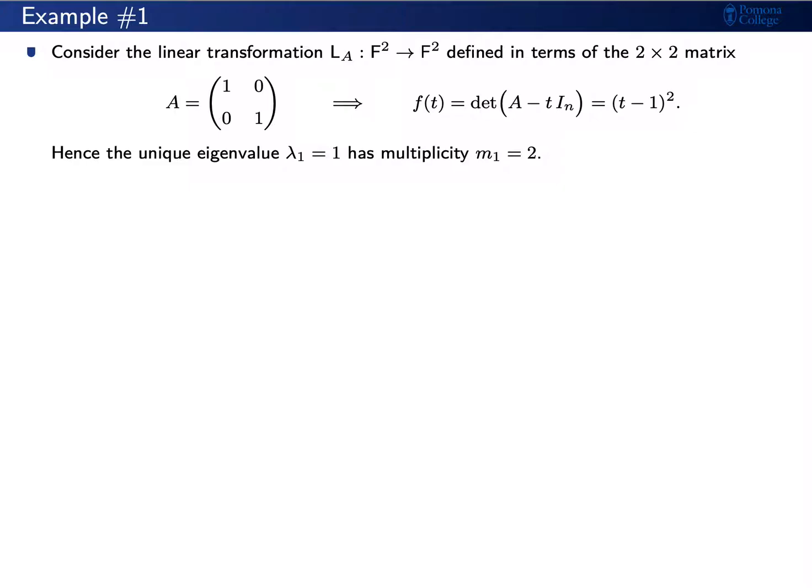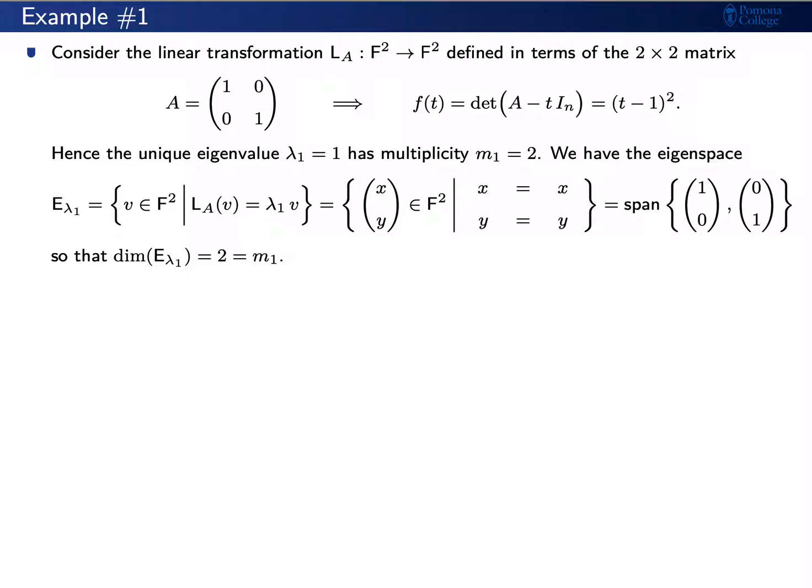We can compute the eigenspace for lambda sub 1 equals 1. If v is the vector (x, y), then L sub A of v equals (x, y) and lambda 1 times v also equals (x, y). So the expression L sub A of v equals lambda 1 times v is equivalent to x equals x and y equals y. Every vector (x, y) satisfies these equations, so the eigenspace is the span of the vectors (1, 0) and (0, 1), which form the standard basis for F squared. Thus the eigenspace E sub lambda 1 has dimension 2, equal to the multiplicity. This matrix A is diagonalizable.